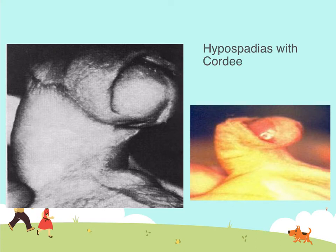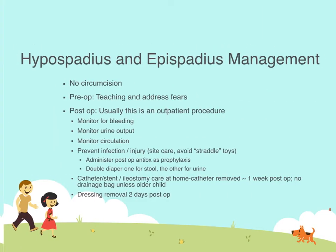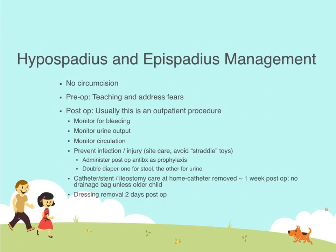Once again, you can see on the bottom right picture that the foreskin is absent. What's important to remember is when we have this present, we do not do a circumcision because they may need to use the extra skin for reconstruction. We need to address the pre-op teaching and the fears that the parents have that this child isn't going to be normal.